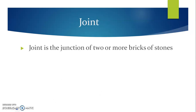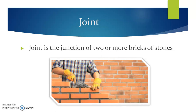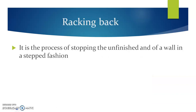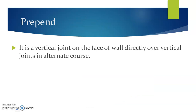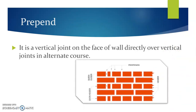Joint. A joint is a junction of two or more bricks or stones. This particular figure indicates the joints used in masonry. Racking back. It is a process of stopping the unfinished end of the wall in a stepped position. This particular figure indicates racking back. Perpend. It is a vertical joint on the face of a wall directly over vertical joints in alternate courses. The joints in alternate courses which come exactly above each other are called perpends. This is very essential for achieving bond as well as for the stability of the masonry construction.